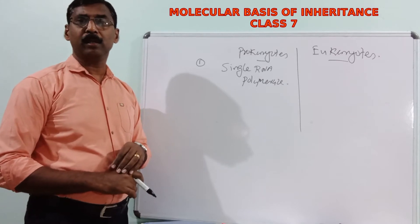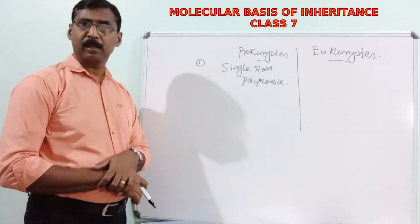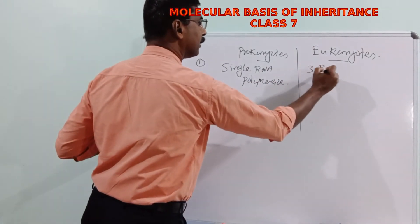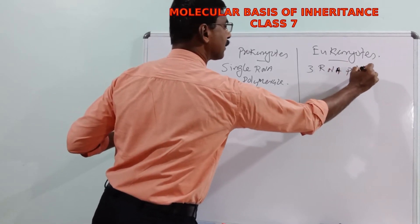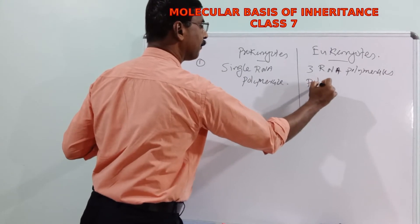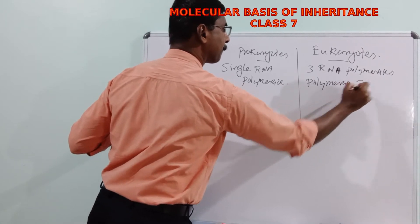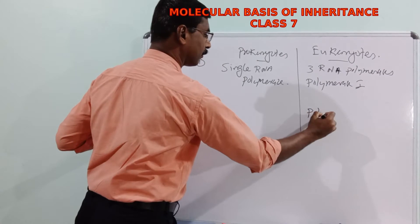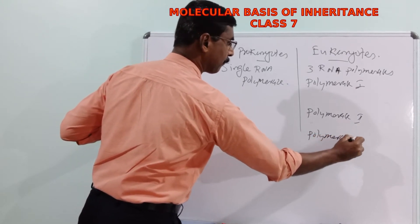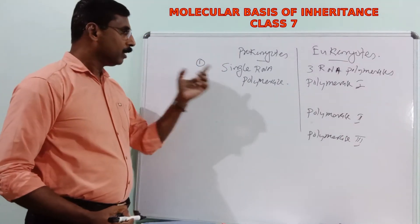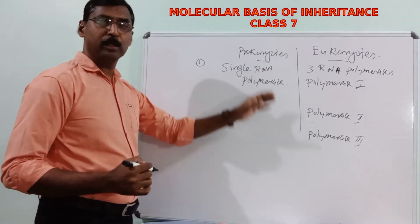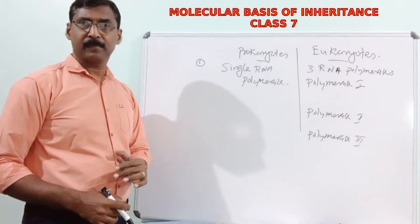Whereas in eukaryotes, three RNA polymerases are present: Polymerase 1, Polymerase 2, and Polymerase 3, each with different functions.